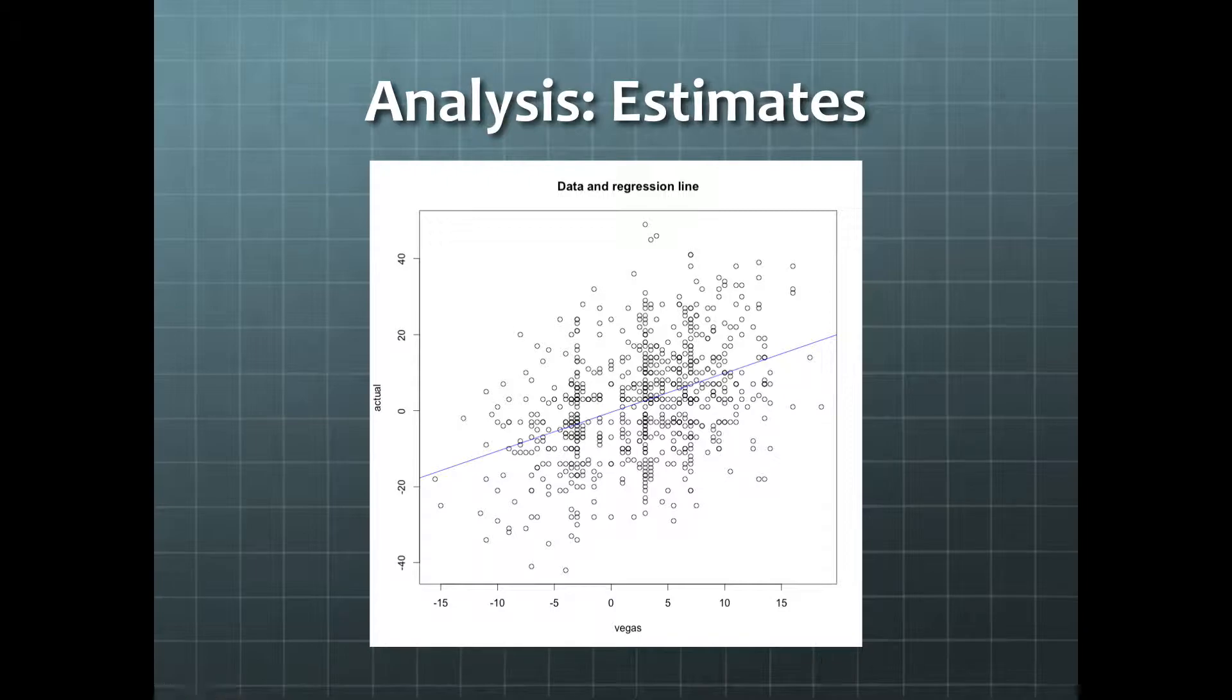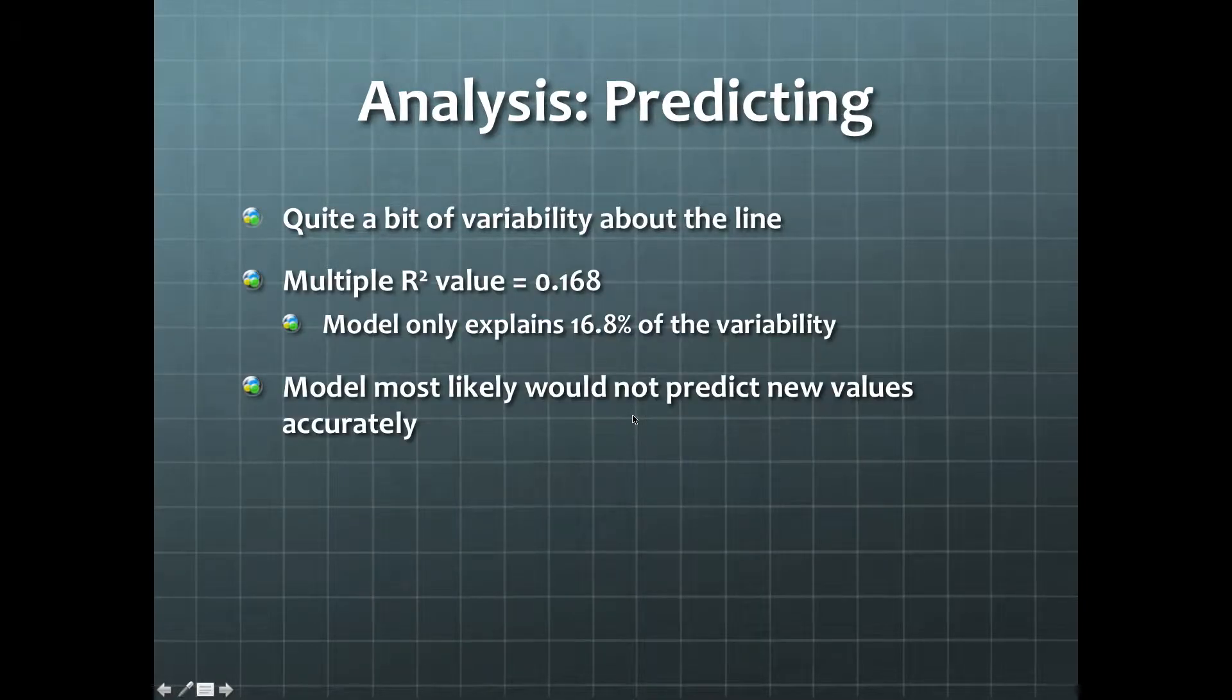Here's the plot of all data points, along with our fitted line, shown in blue. You can see that there's quite a bit of variability about the line. In addition, the multiple R-squared value is 0.168,